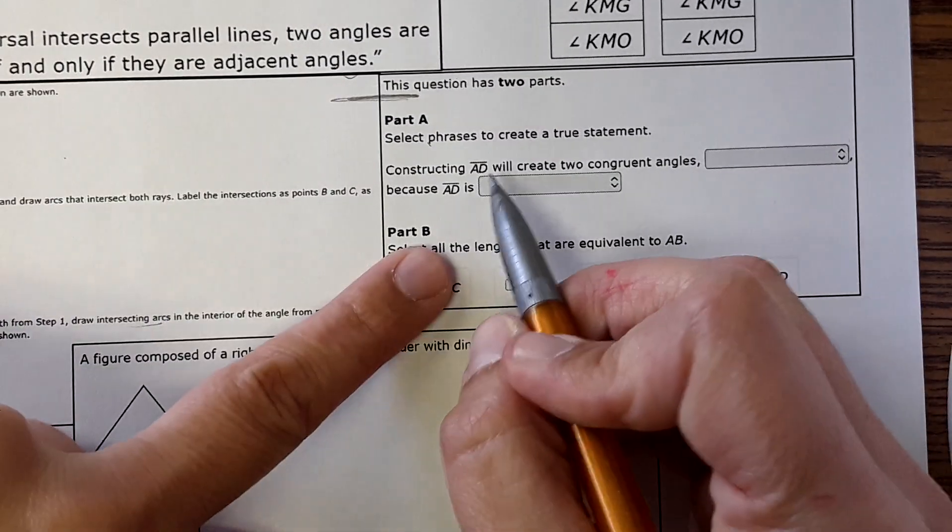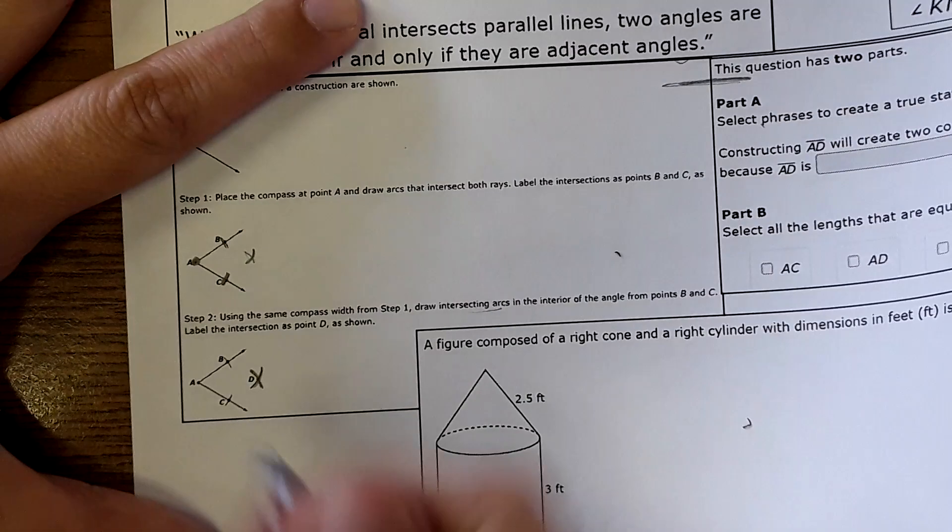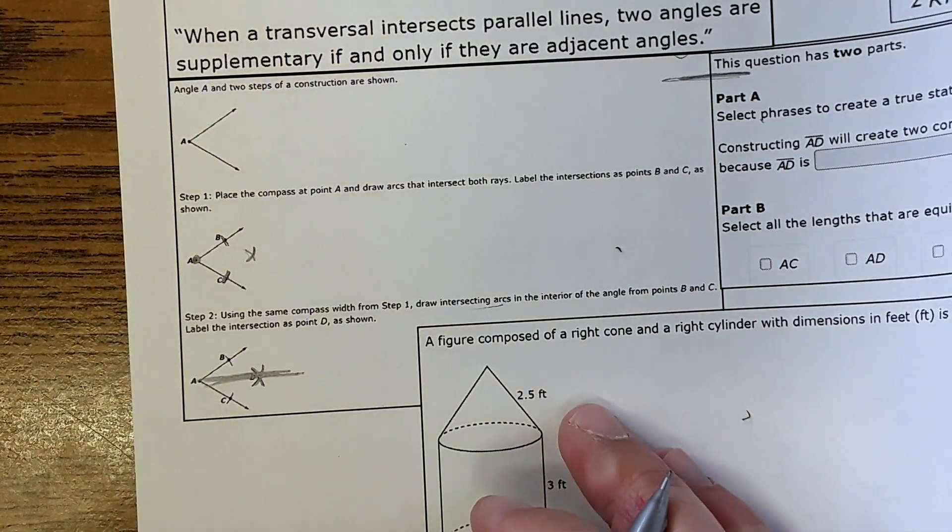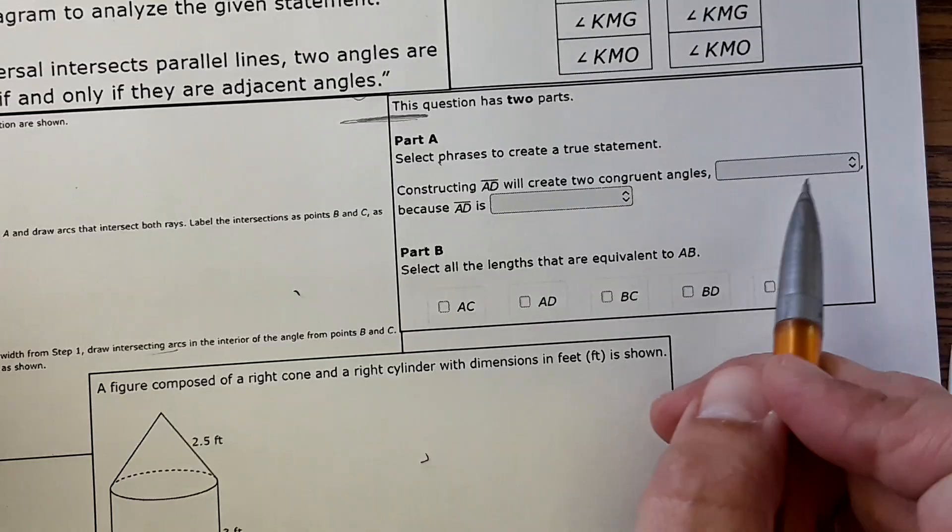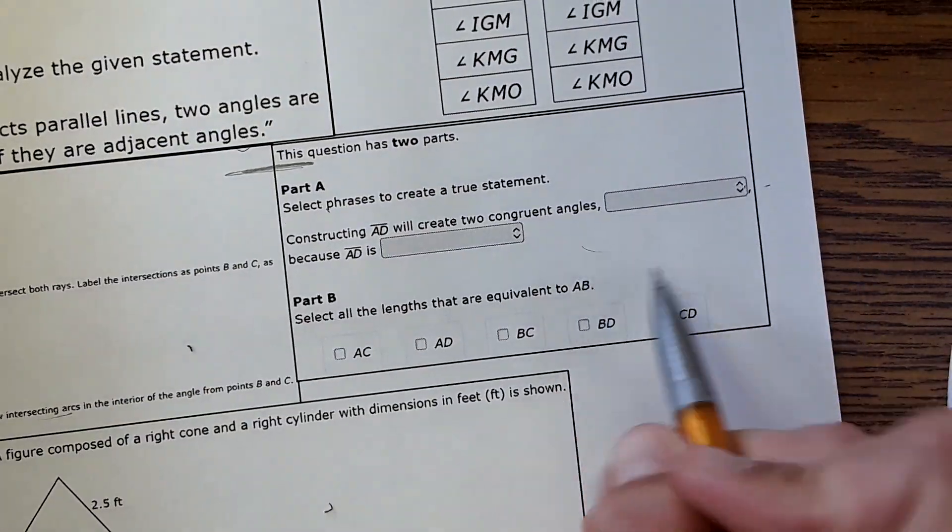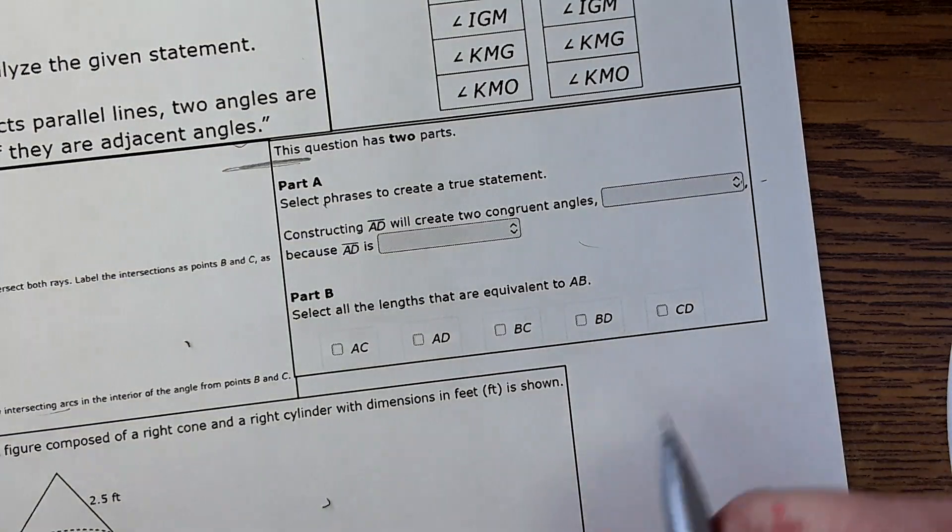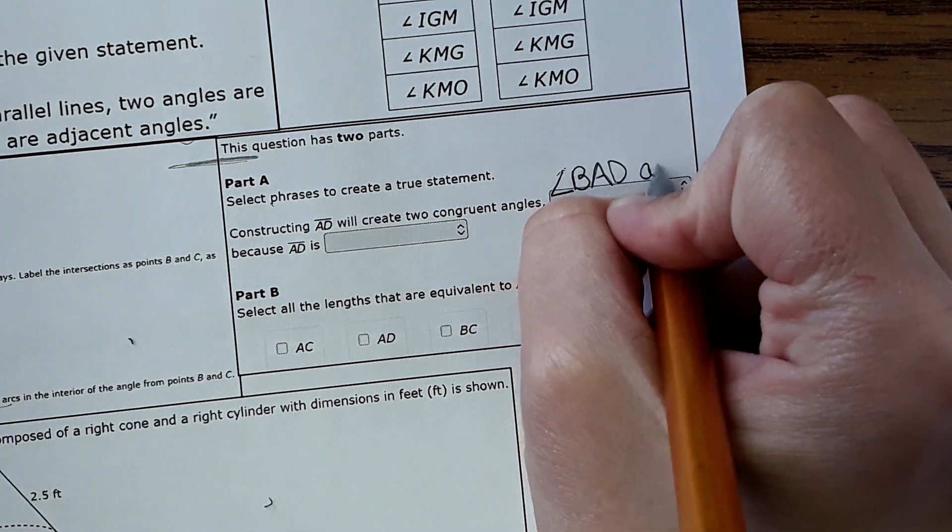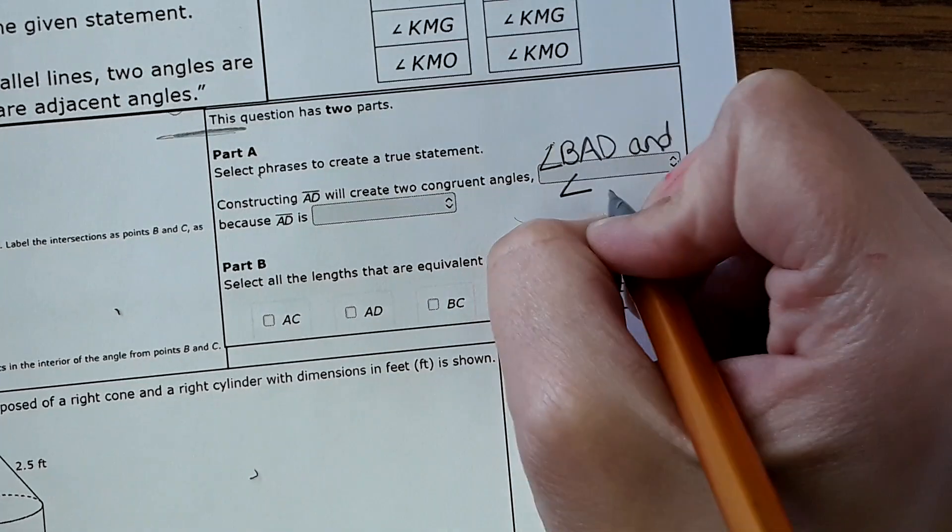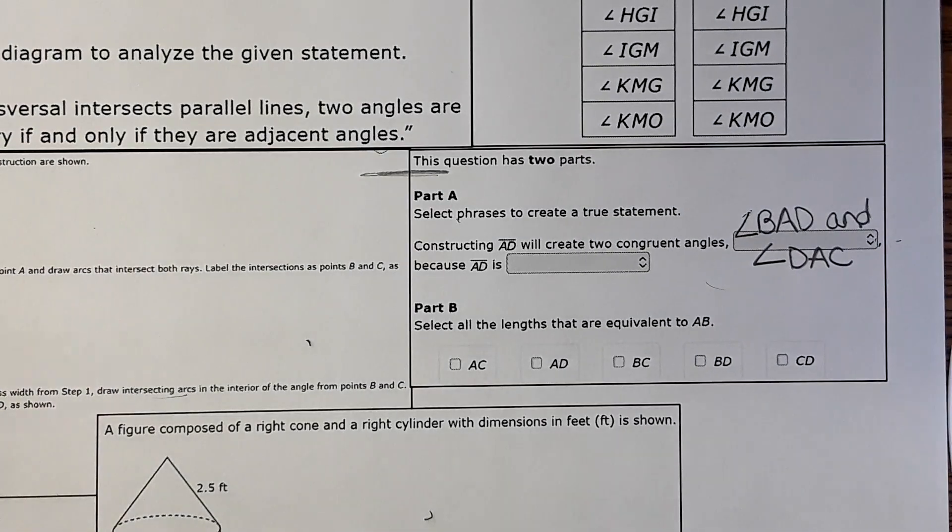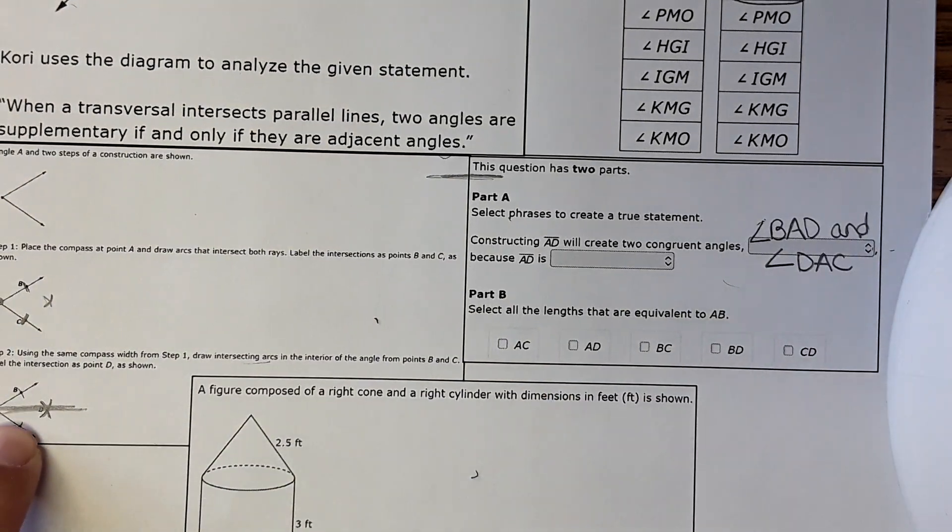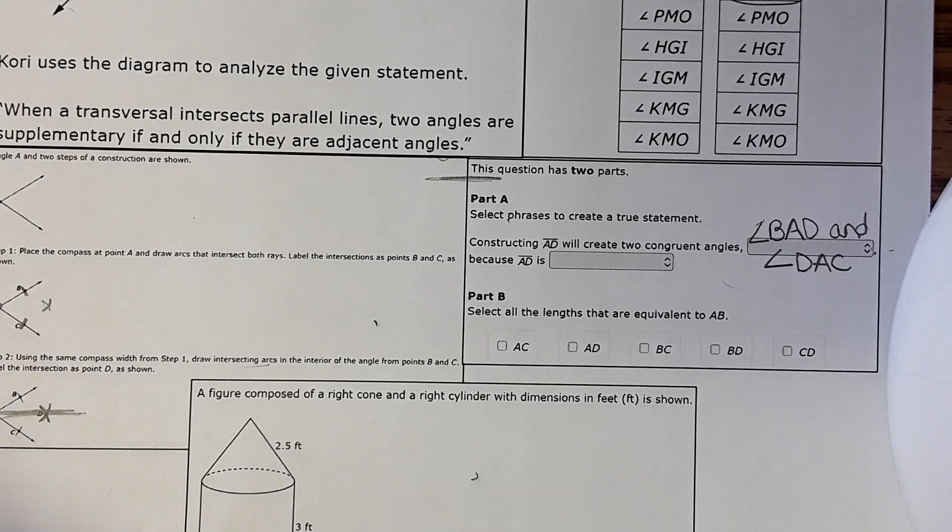Looking at the questions, it says select phrases to create true statements. Constructing segment AD will create two congruent angles - if they were to connect A to D right here that would be an angle bisector. They do create two congruent angles. This is a drop down. The one that would be correct is that the two congruent angles are angle BAD and angle DAC.